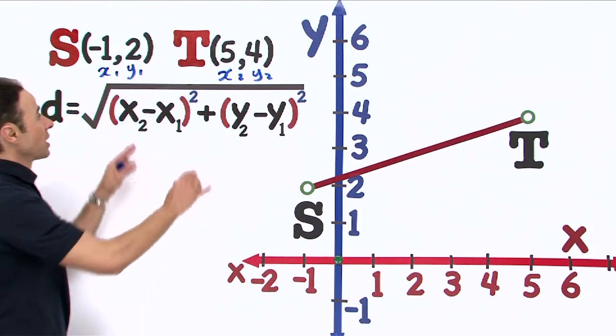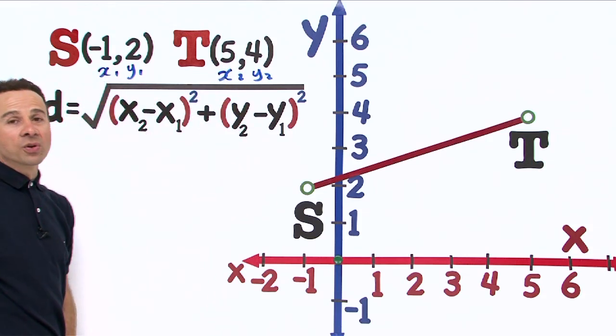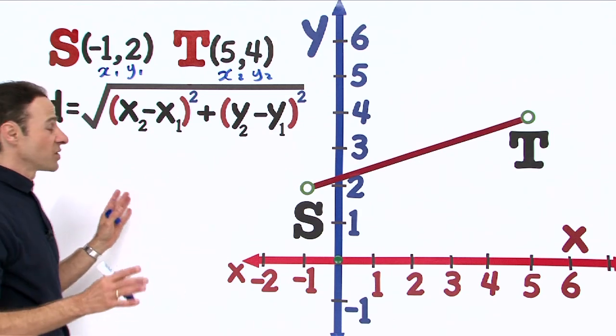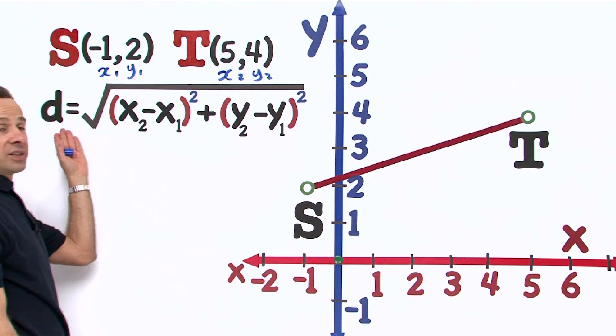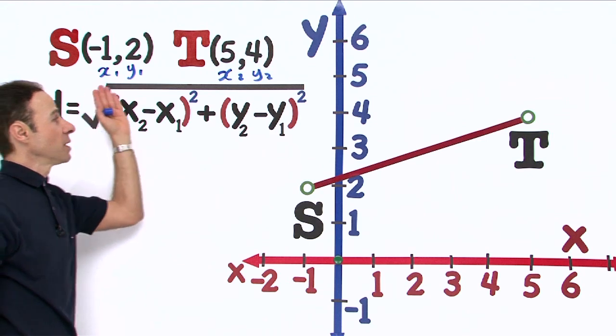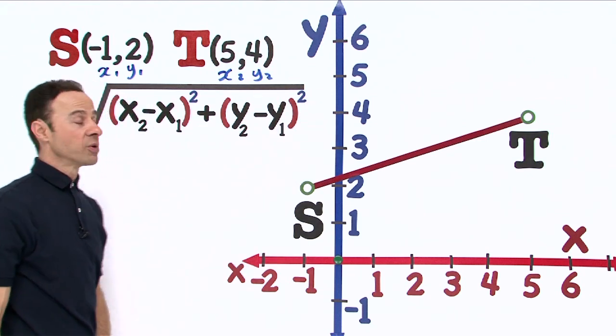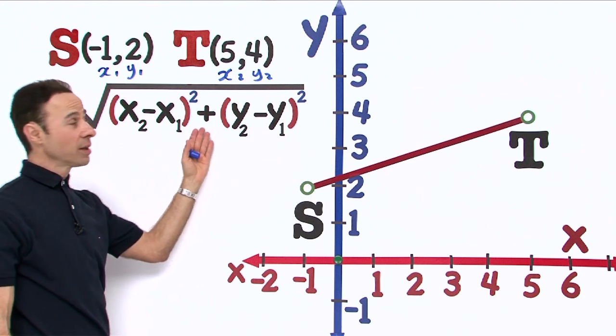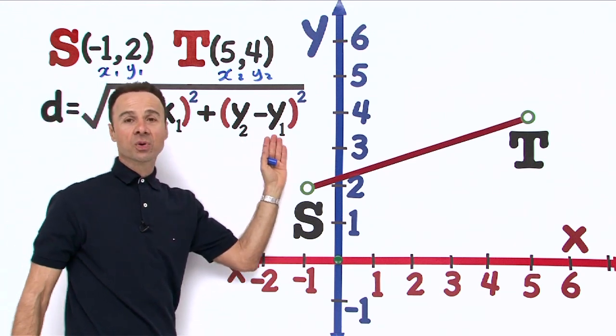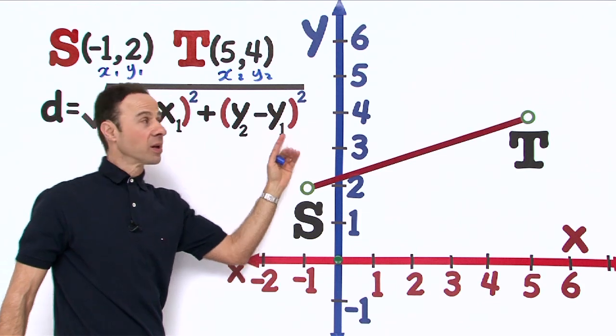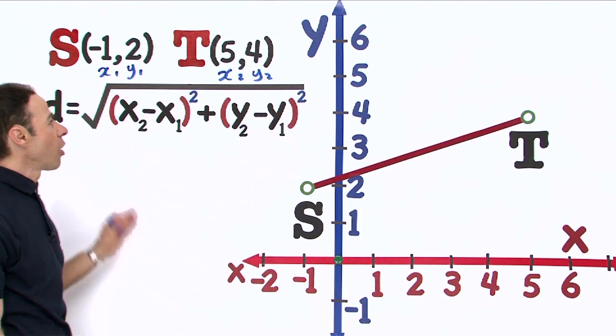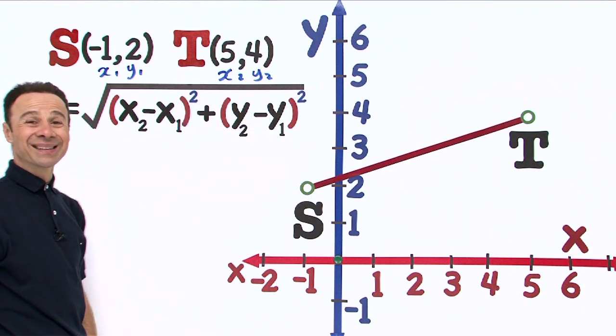Now we can actually substitute correctly into the formula. So just going through the formula one more time: it is d for distance equals the big giant long square root sign, x₂ – x₁ all squared, plus y₂ – y₁ all squared, and then the whole answer we square root it to get the exact distance between S and T.